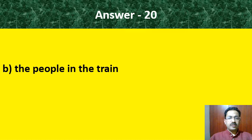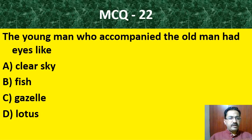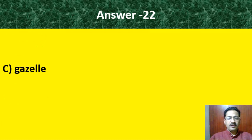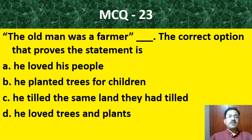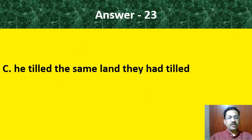MCQ question 20: When Roma met with an accident, the callousness was exhibited by: the doctor in the hospital, the people in the train, the tempo truck driver, Baleshwar Mishra. The correct answer is the people in the train, who did not go to help Baleshwar. MCQ 21: Roma's fiancé was — Baleshwar Mishra, Dinesh, Talraj, call center executive Vijay. The correct answer is Vijay.